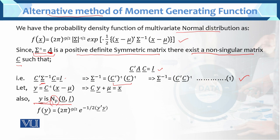So let y equals C inverse times (x minus mu). This transformation we know from the previous slide. So we find the value of x, where x equals C y plus mu. We need x because we have x minus mu, sigma inverse, x — we need to enter this value there. So using the standard normal variate with mean vector 0 and variance-covariance matrix sigma, we get the probability density function.